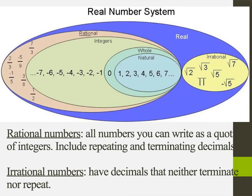Everything you see here is part of the real numbers. Now the most basic, as I like to think about it, would be the natural numbers — our counting numbers, starting with 1, 2, 3, 4, so on and so forth. They're essentially all the positive integers, our normal numbers.